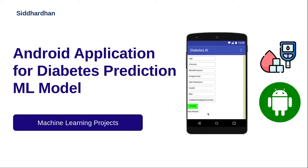We have already worked on building this diabetes model — I'll also give the link to that video in the description. Once we have this trained model, we can deploy it as a free public API using ngrok and then link that API to this Android application. For building this Android app, we'll be using a no-code tool called MIT App Inventor, which is a drag-and-drop tool for easily prototyping ML models with a good user interface.